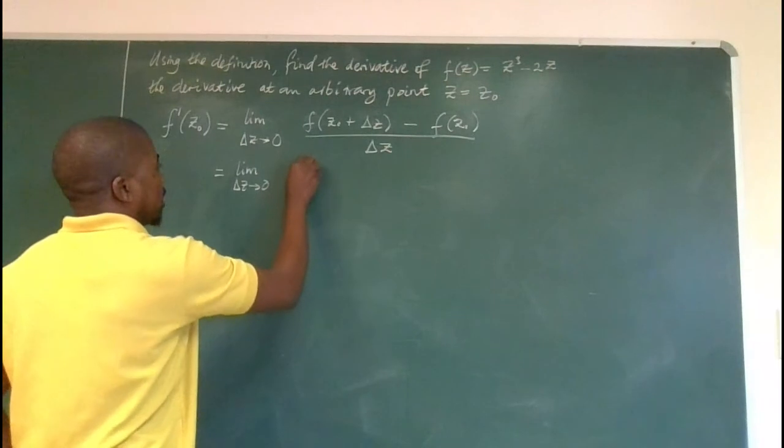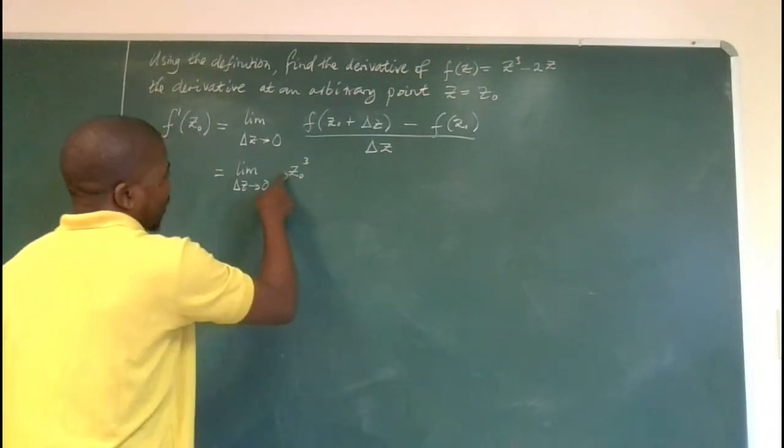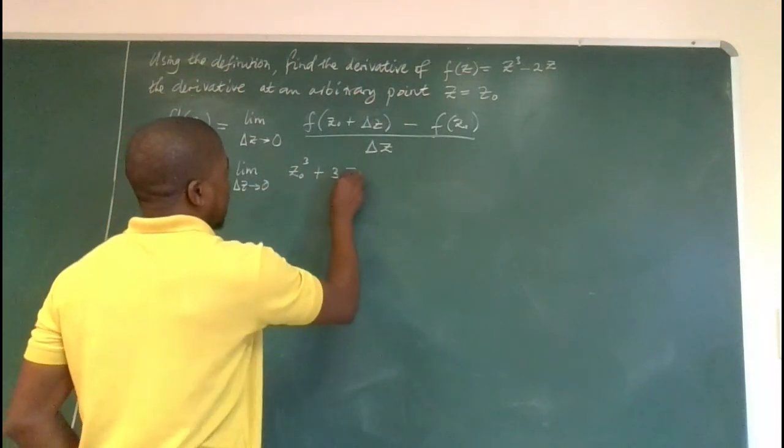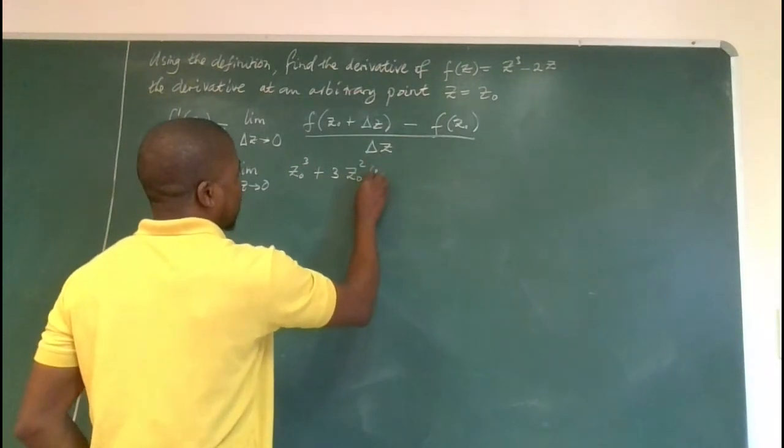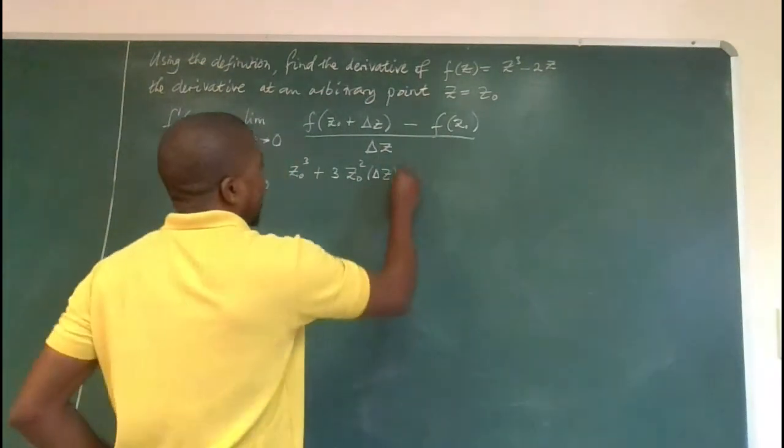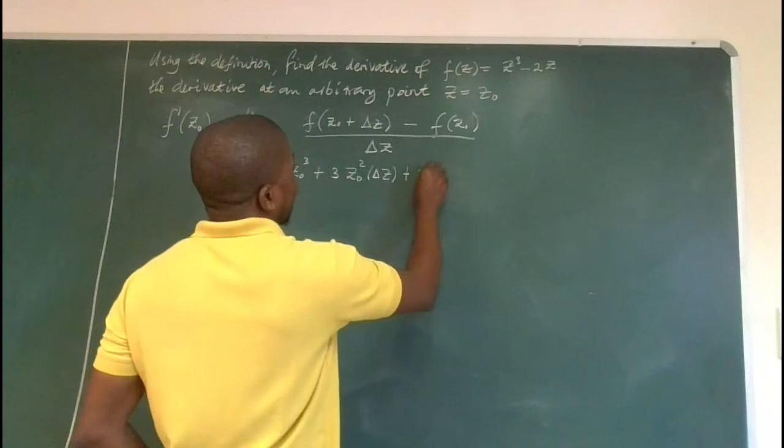Then delta z will be zero, the coefficient will be one, but the next coefficient will be three. Then z naught, the power of z naught will decrease, but delta z will start to increase from zero to one. And then the next coefficient is also known to be a three.